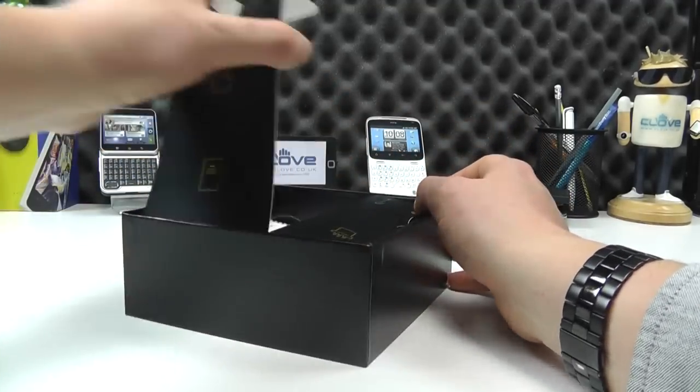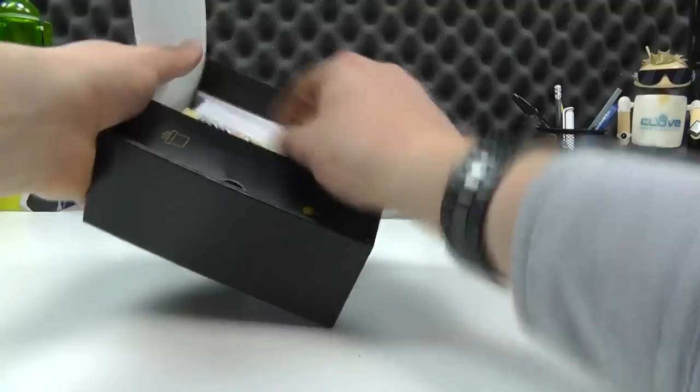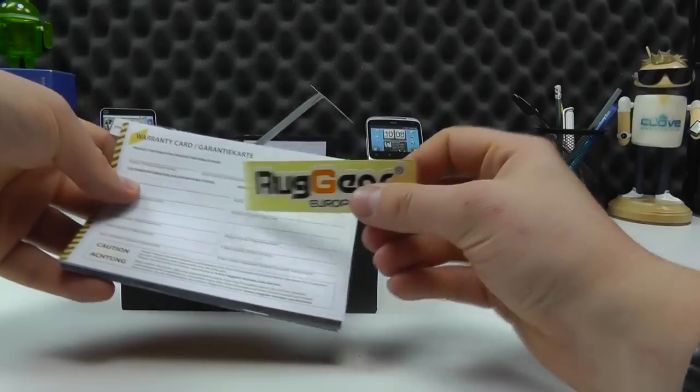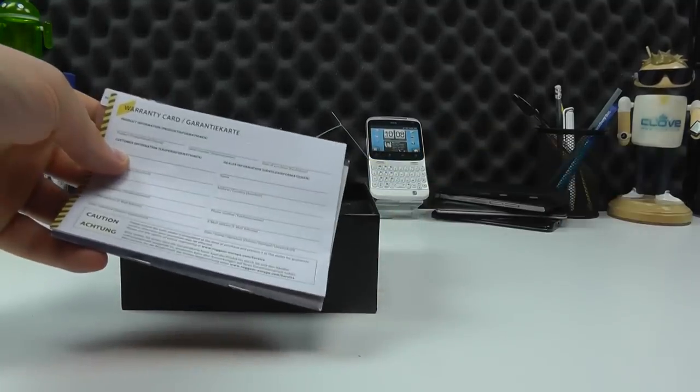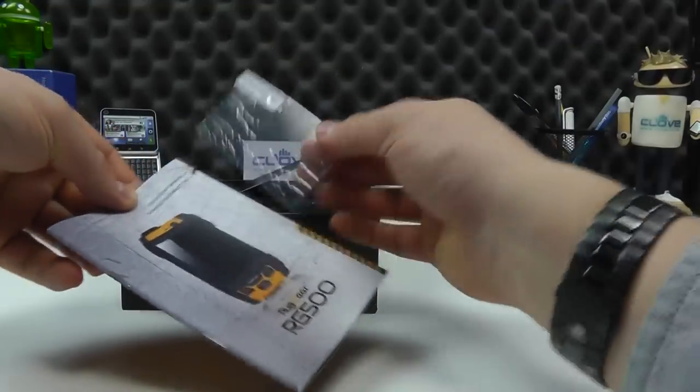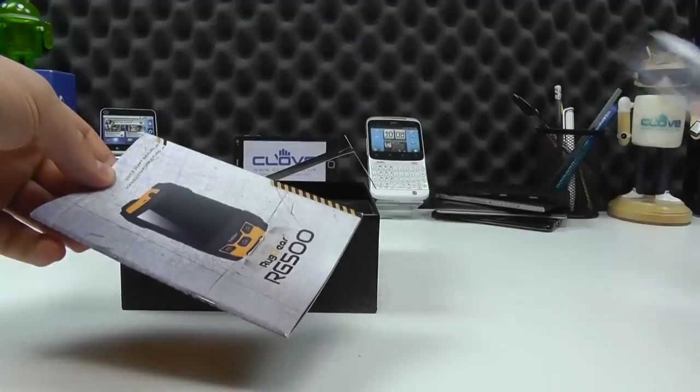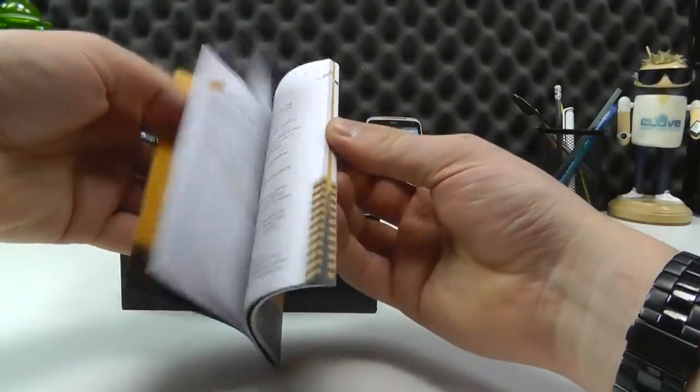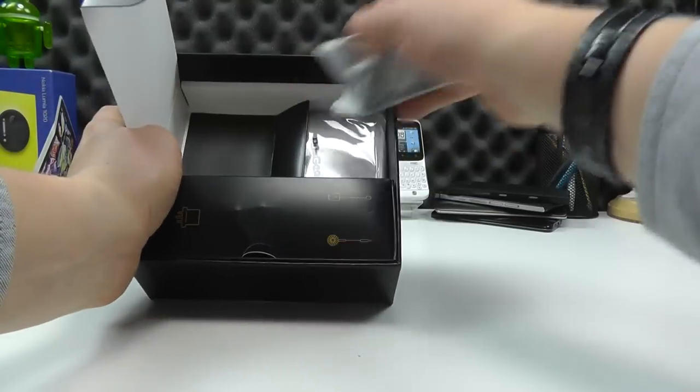If you need other parts of the world, you will need to source that. Also included in the box, you get a Rug Gear sticker, because everyone needs a Rug Gear sticker. You've got the warranty cards. You've got a screen protector included there as well, and a quick start guide in color, which is quite nice to see. Not very often you get a printed manual.